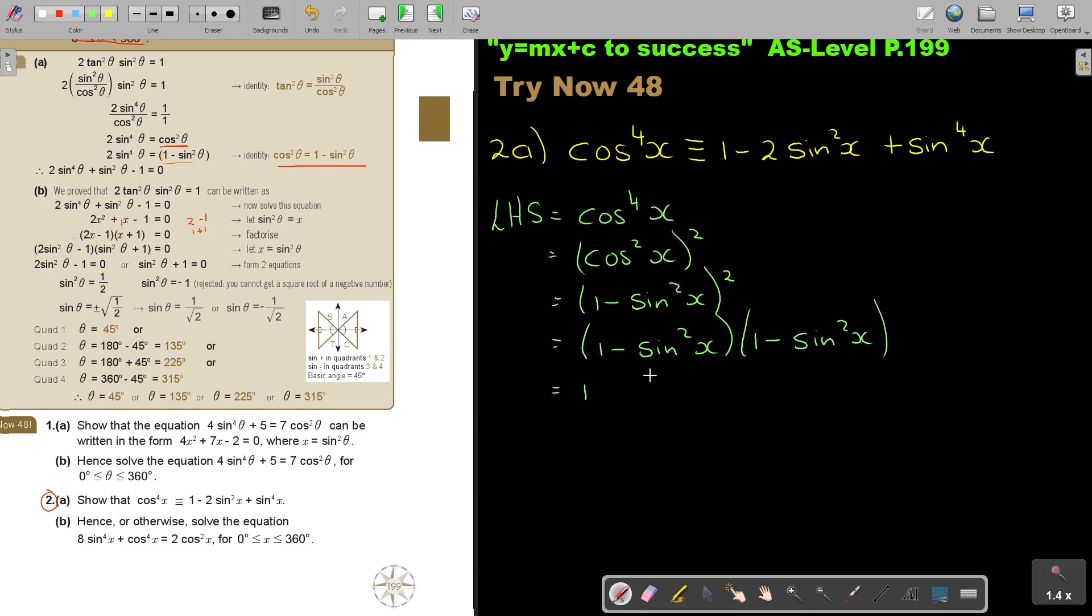And now I can multiply it. One times one is one. This times this is minus sin squared x minus sin squared x plus sin to the power 4x. So it's 1 minus 2 sin squared x plus sin to the power 4x. And now let's check. This is one, this, this. So therefore, left hand side equals right hand side. And that was number A.